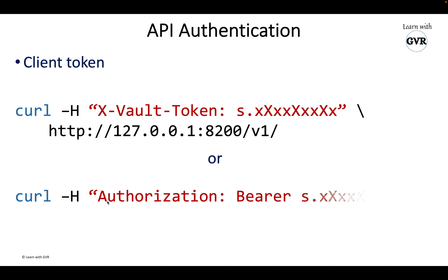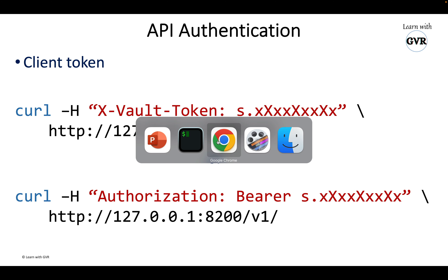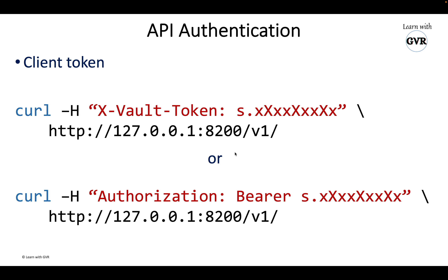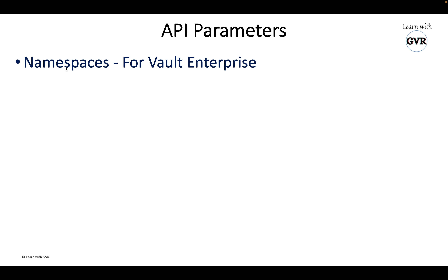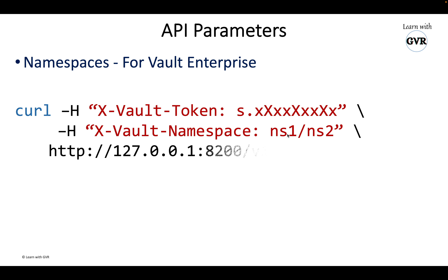There is an alternate way: 'curl -H Authorization: Bearer <root_token>'. You can also use '--header' instead of '-H' — that's the long form of the same short parameter. This is the first step. The second rule is API parameters. In Vault there is a concept called namespaces, available for Vault Enterprise. The parameter usage is the same: pass '-H' with the authentication token and 'X-Vault-Namespace: <namespace>'.